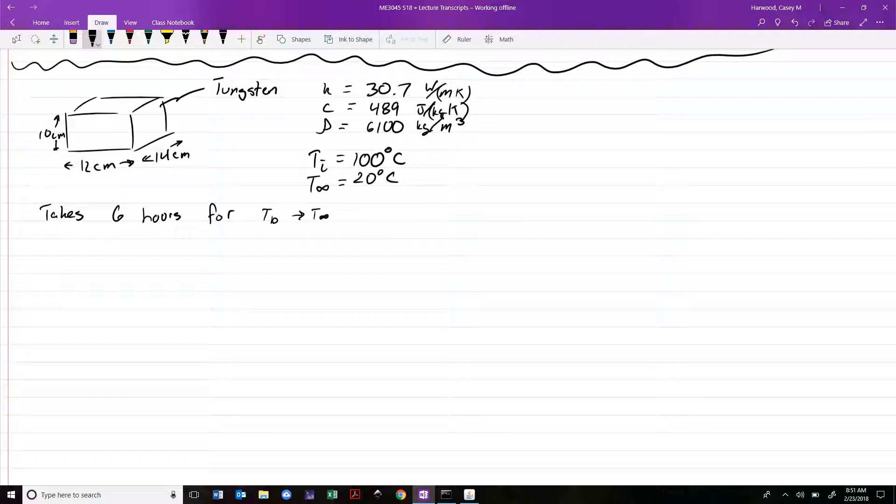It has conductivity 30.7 watts per meter kelvin, heat capacity 489 joules per kilogram kelvin, and density 6100 kilograms per meter cubed. Dimensions are 12 centimeters wide by 14 centimeters long by 10 centimeters high. It starts at 100 degrees Celsius, placed into ambient air at 20 degrees Celsius.